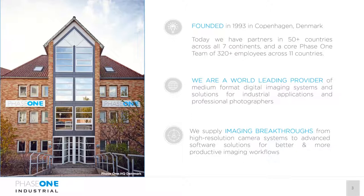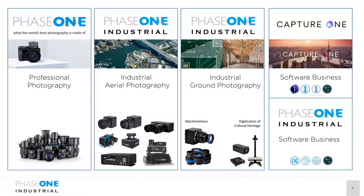Phase One is the world-leading provider of digital medium format imaging solutions, founded in 1993 in Denmark. We provide ultra-high-resolution cameras and highly productive software solutions. Our different business units cover professional photography, the industrial unit divided into aerial and ground photography, and the software business — including Capture One and other software developed for industrial applications.